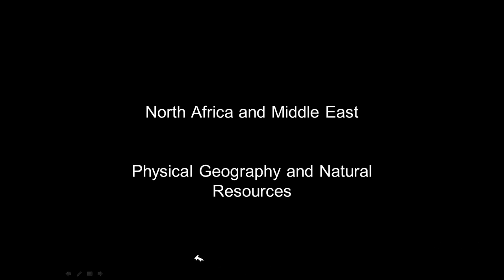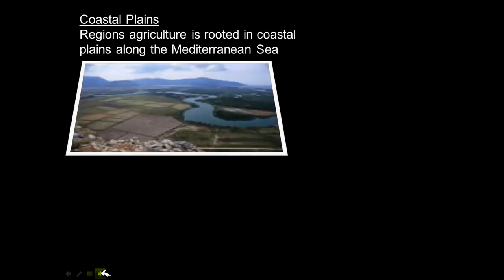We are now covering the physical geography and natural resources of North Africa and the Middle East. The first concept is coastal plains — regions where a lot of agriculture takes place. They're normally flatlands with fertile soil, oftentimes near water. Many of these coastal plains regions are found along the Mediterranean Sea in North Africa and the Middle East.